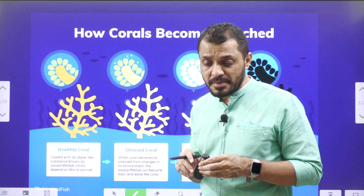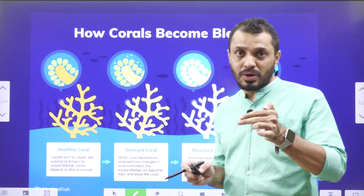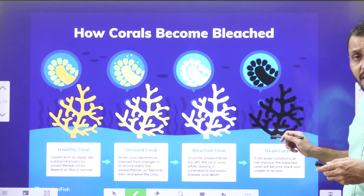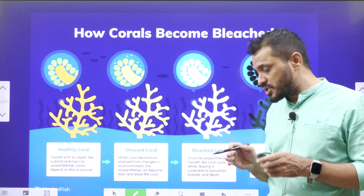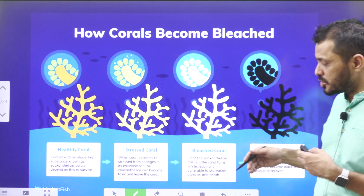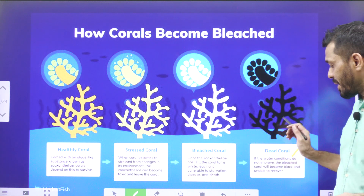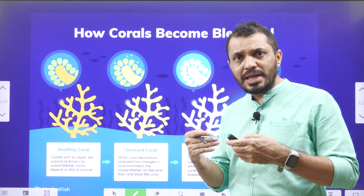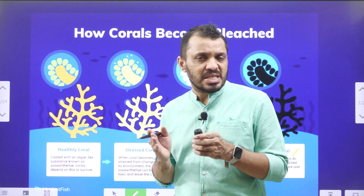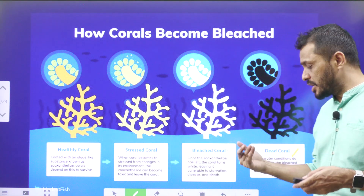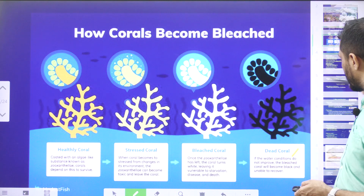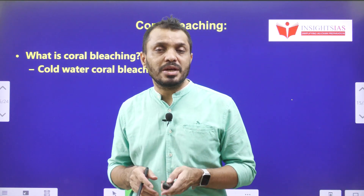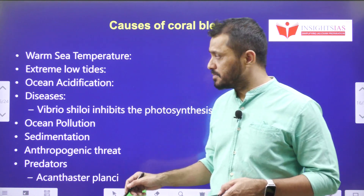Even though coral bleaching happens, you can still revive that coral reef. But if it goes beyond that extent and the coral dies, we cannot bring it back to normal. If the water condition does not improve, the bleached coral will become black and unable to recover. A stressed coral is when the algae has started to slowly leave — that is a stressed coral. If it continues, it becomes bleaching; if it continues further, it becomes a dead coral. When corals are subjected to stressful conditions and algae is expelled from the polyp, that is coral bleaching.